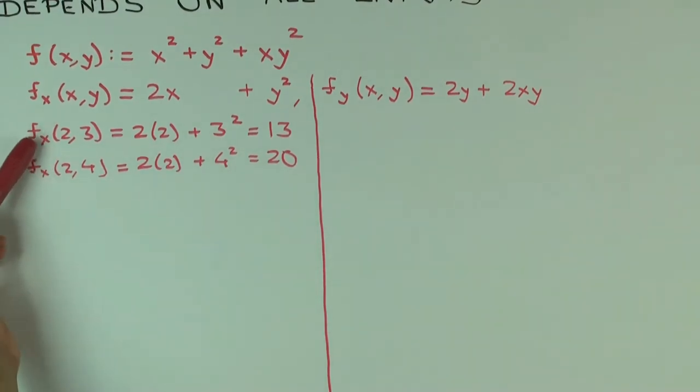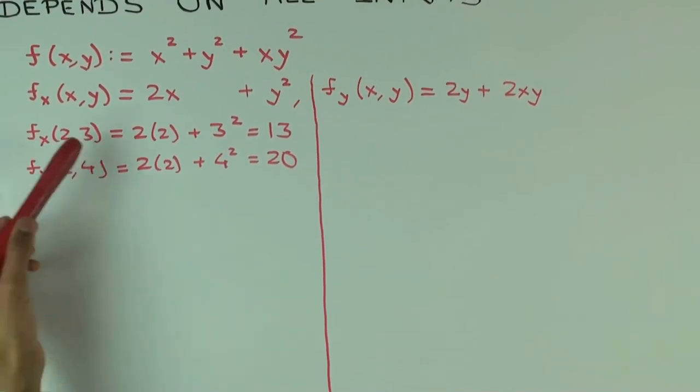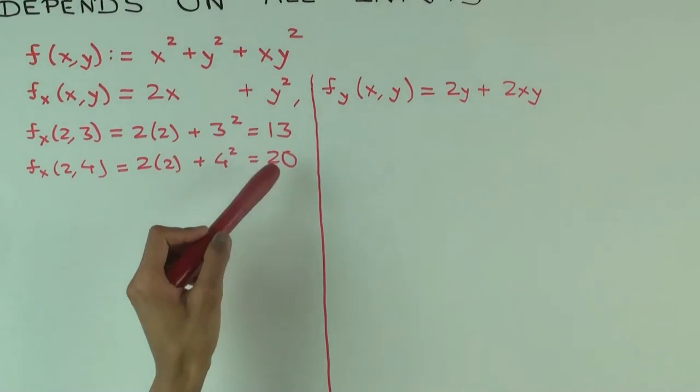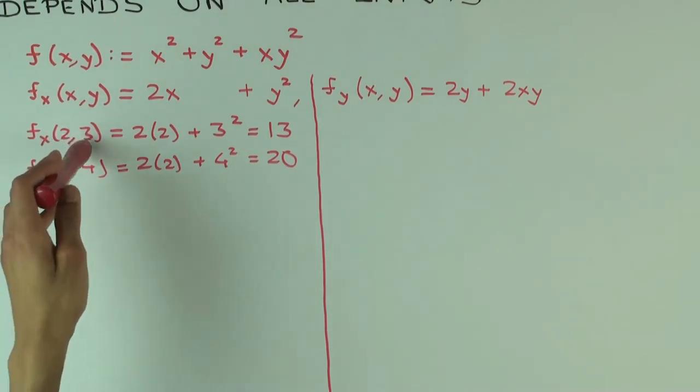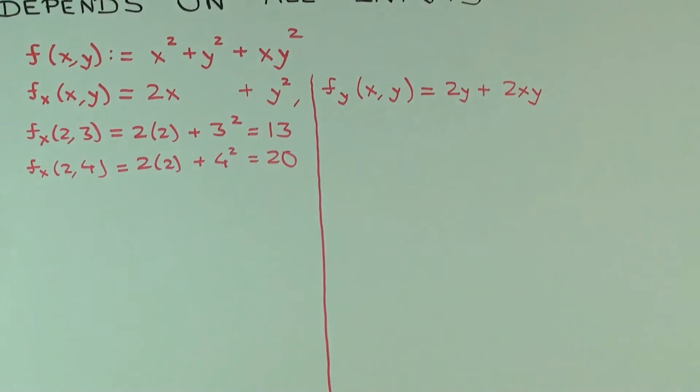So, what do we notice? The value of f sub x changes when you change the y value, even though the x value remained the same. It was 13 initially, and now it's 20. So the point is that the value of f sub x depends not just on the x input, but also possibly on the y input.